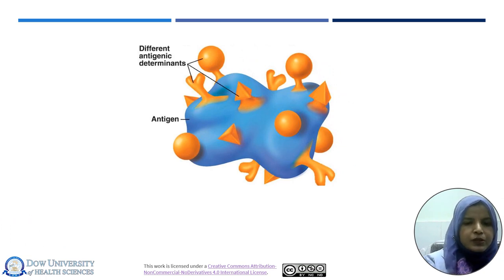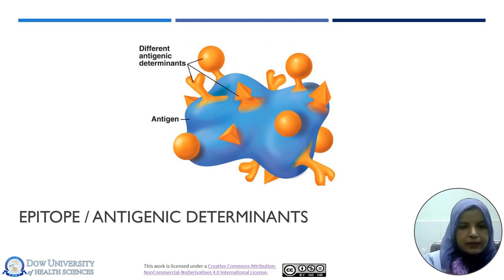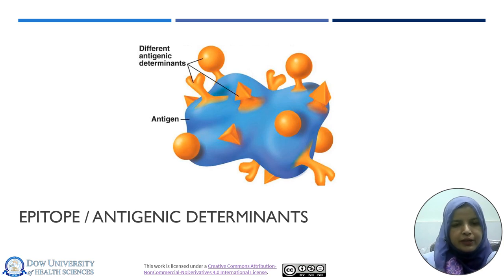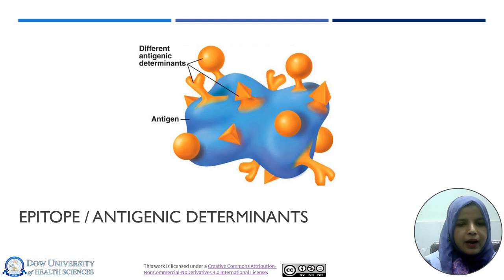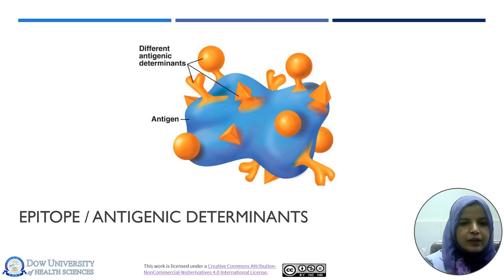What are Epitopes? Epitopes are basically the specific structures found on the surface of an antigen. They are also called antigenic determinants. As shown in this picture, the blue one is an antigen and the yellowish-orange regions are the epitopes found on the antigen. These epitopes separately bind to different antibodies because they look different in shape and structure, so they have different specificities and will bind to their specific antibodies accordingly.